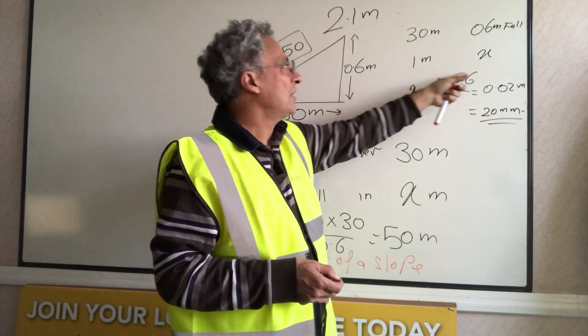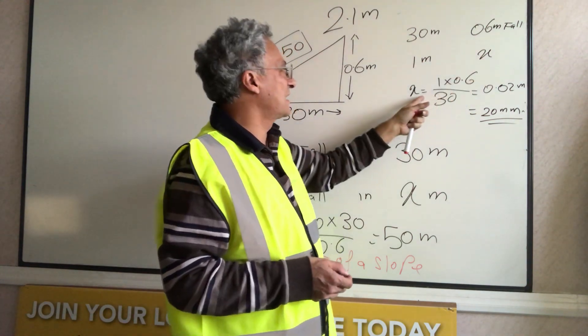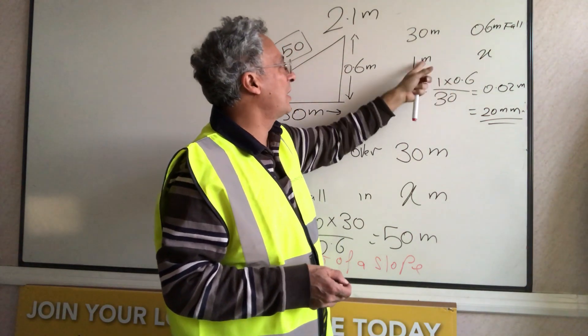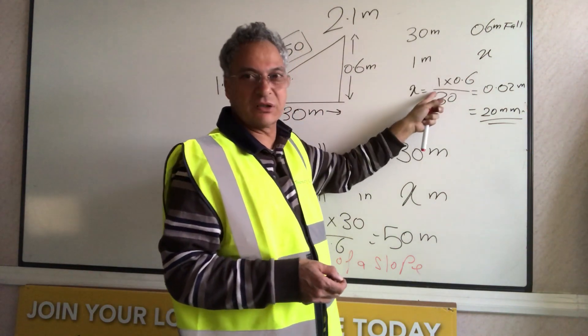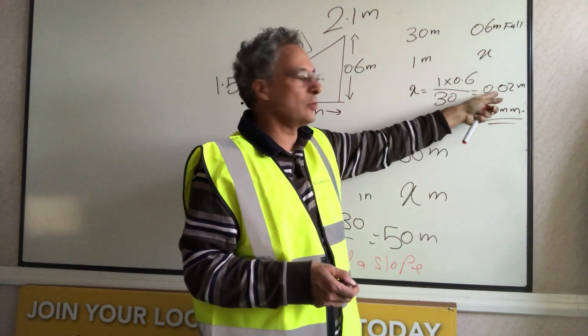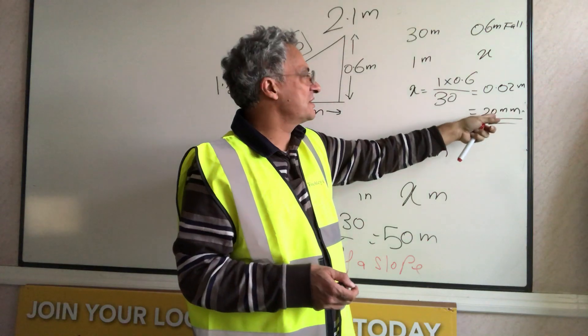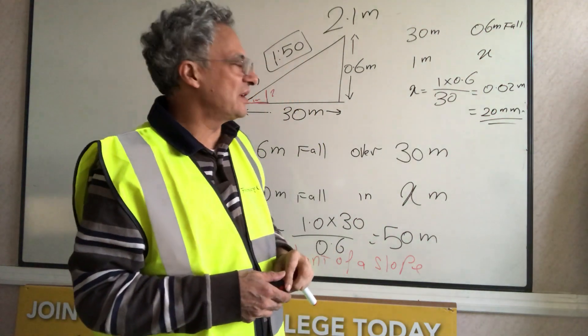In 1 meter, how much will be the fall? So in that case, we'll write x is 1 times 0.6 divided by 30. That gives me 0.02 meters, which is the same as 20 millimeters per meter.